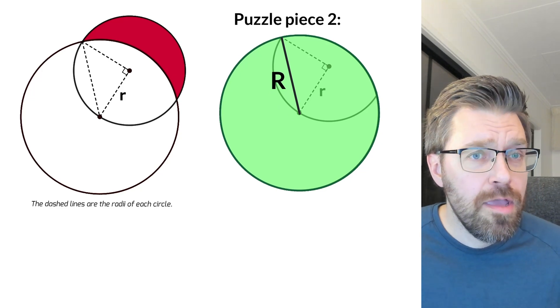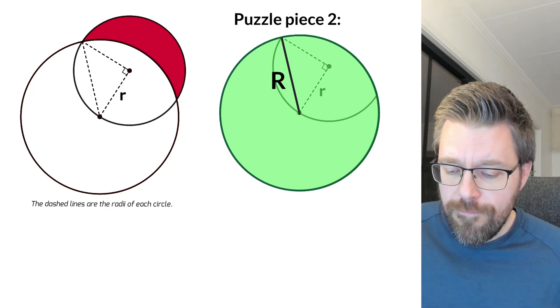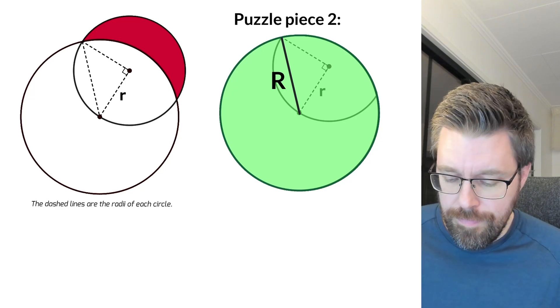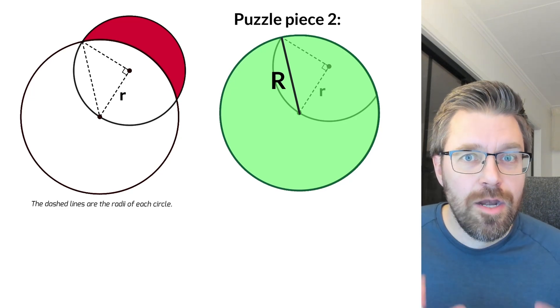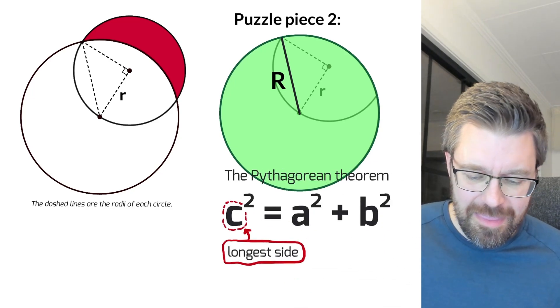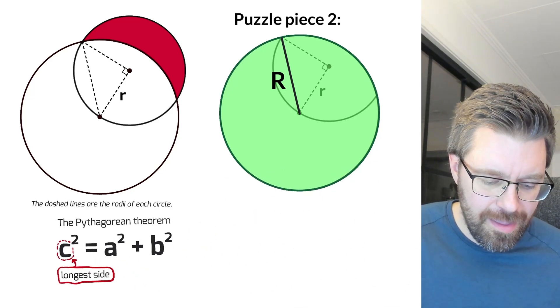And then I will use Pythagorean theorem to write the area not in big R, but in little r, so that I can use the same variable in all my puzzle pieces. Okay, so the Pythagorean theorem is this one.